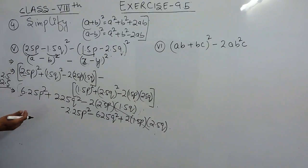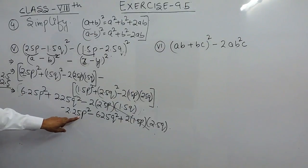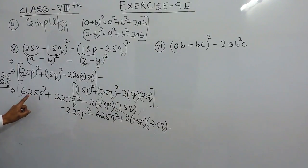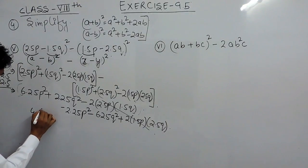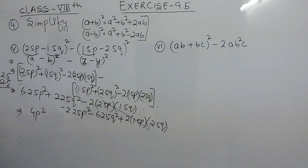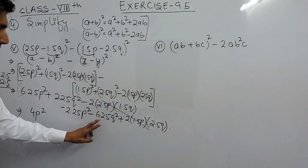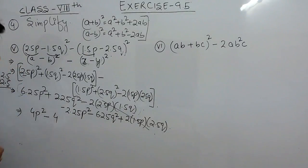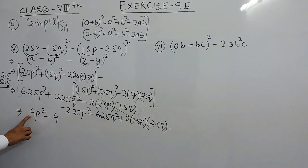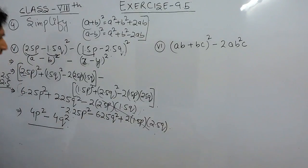So the two cross product terms cancel out. For the p² terms: 6.25 minus 2.25 equals 4, giving 4p². For the q² terms: again 6.25 minus 2.25 equals 4, but with a negative sign because the greater value has a negative sign here, giving −4q². So the final answer for this part is 4p² − 4q².